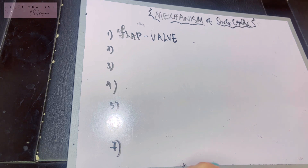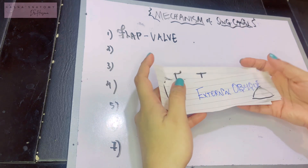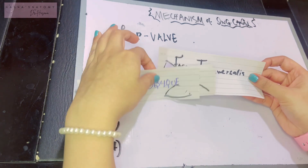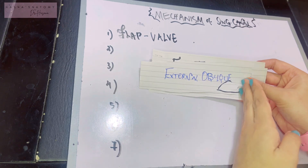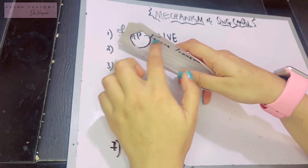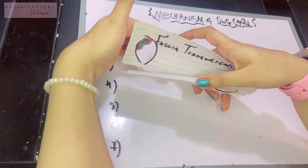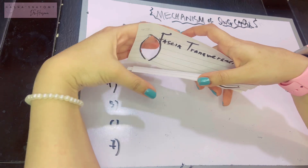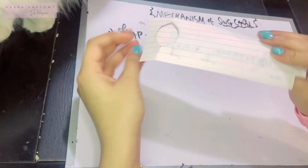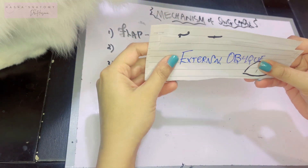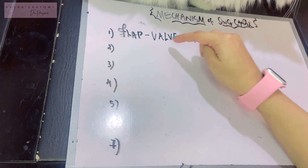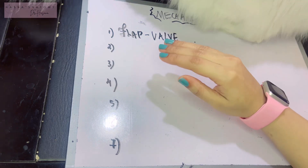The flap valve mechanism is based on the fact that the inguinal canal is an oblique passageway — the inguinal rings are not directly opposite each other; one is lateral and one is medial. When intra-abdominal pressure is raised due to sneezing or coughing, the anterior and posterior walls of the canal approximate, and since the two openings are away from each other, the openings are completely closed. This is the flap valve mechanism.